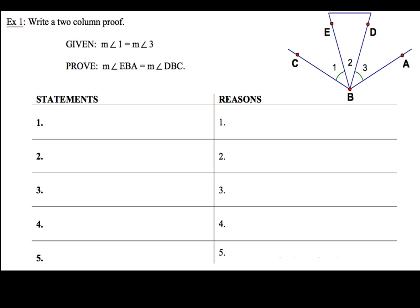We're going to be given the measure of angle 1 equals the measure of angle 3. And what we have to prove is that the measure of angle EBA — this angle right here — is going to be equal to the measure of angle DBC. So I've got to show these two angles are going to be equal.